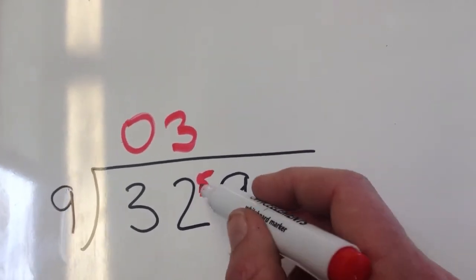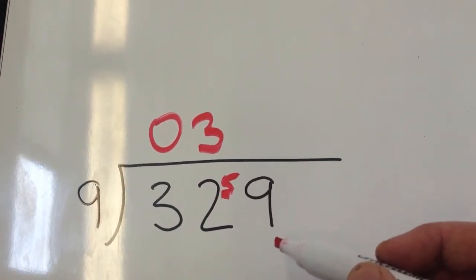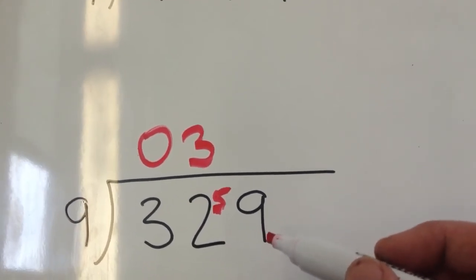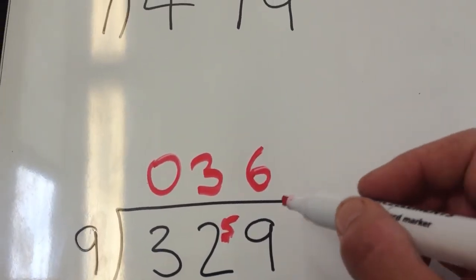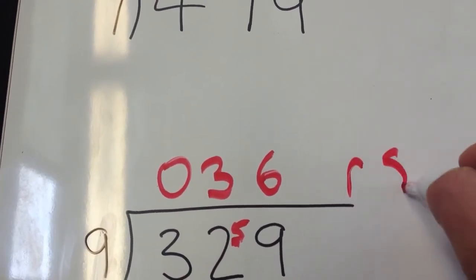So now 9s into 59. Well, 9 fives are 45, 9 sixes are 54. That's my closest number. So 9 sixes are 54, and I've got 5 left over to make 59. That's remainder 5.